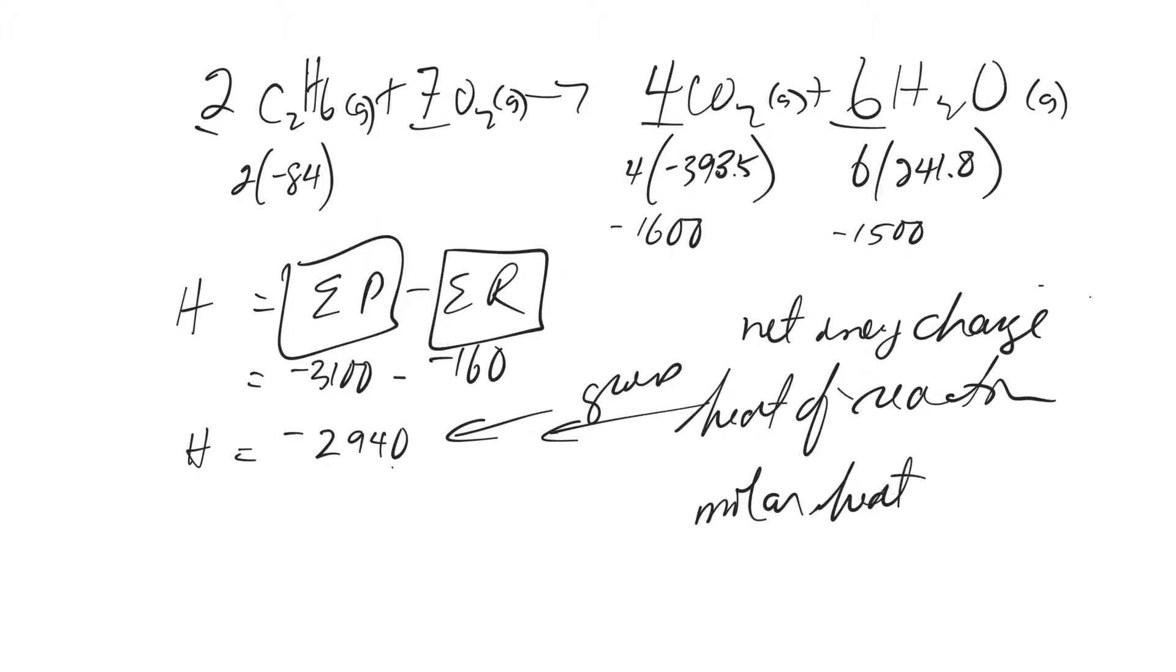A molar heat of reaction is, if I want to know the molar heat of reaction for a particular thing, say of ethane, then I would take this number, 2940, and I would divide it by however many moles of that I have. So I divide it by 2, and that'll come out to 1470.